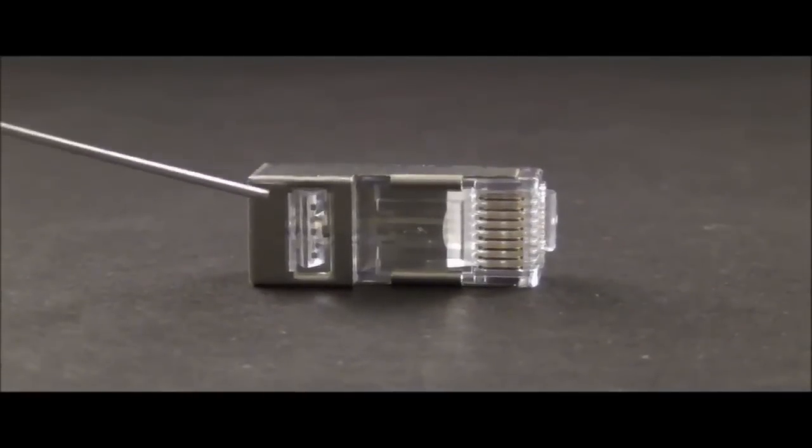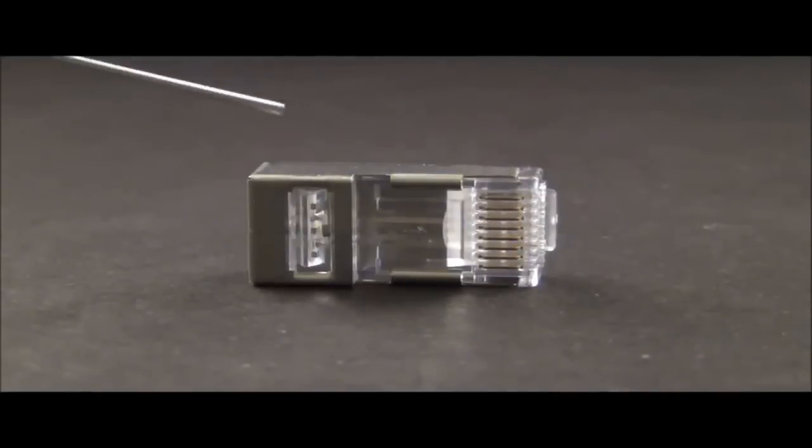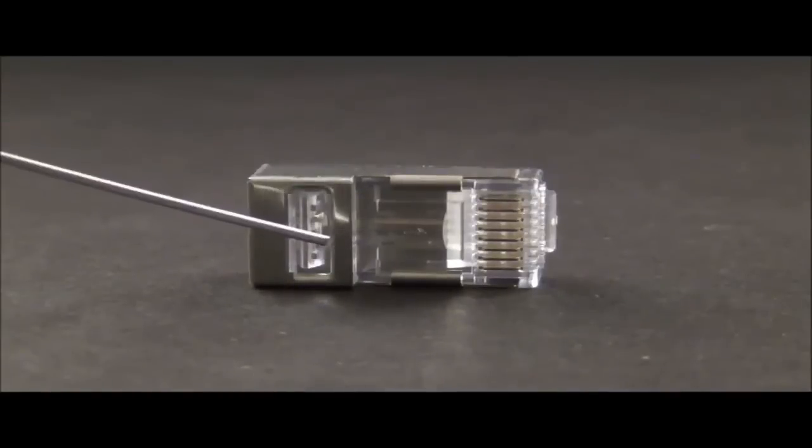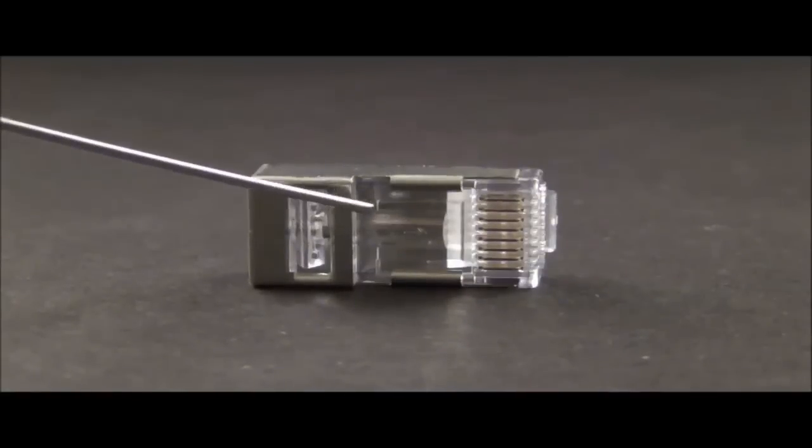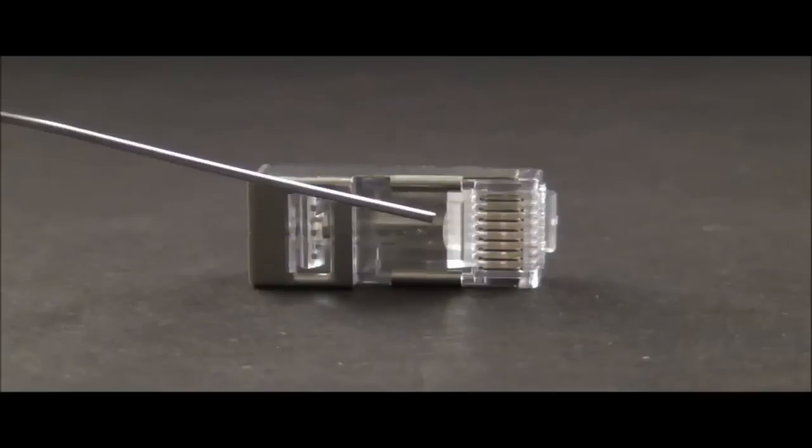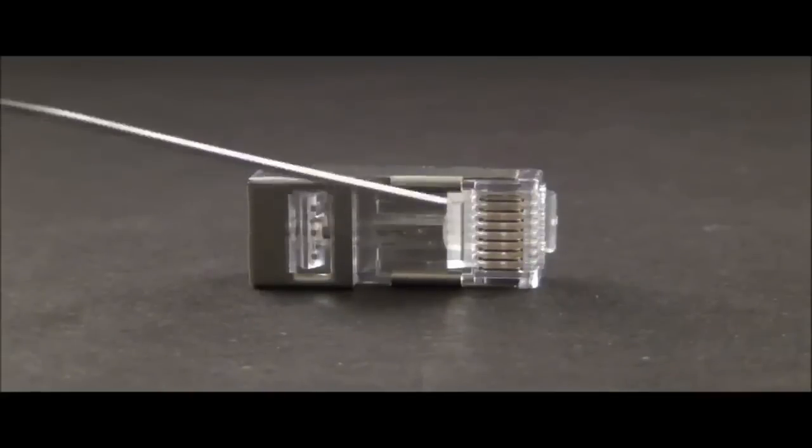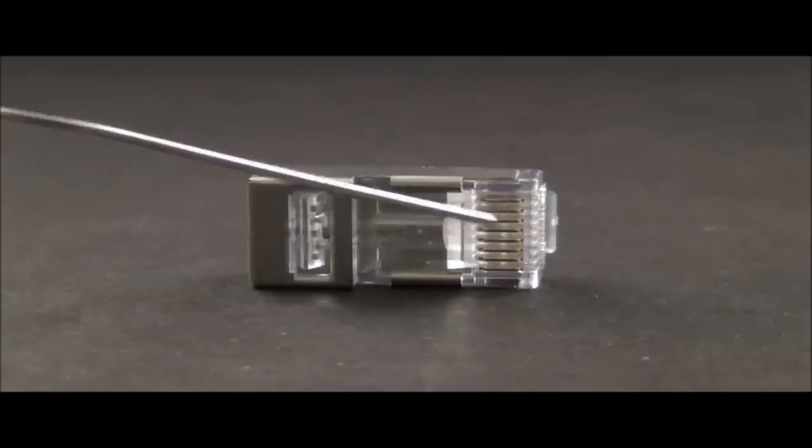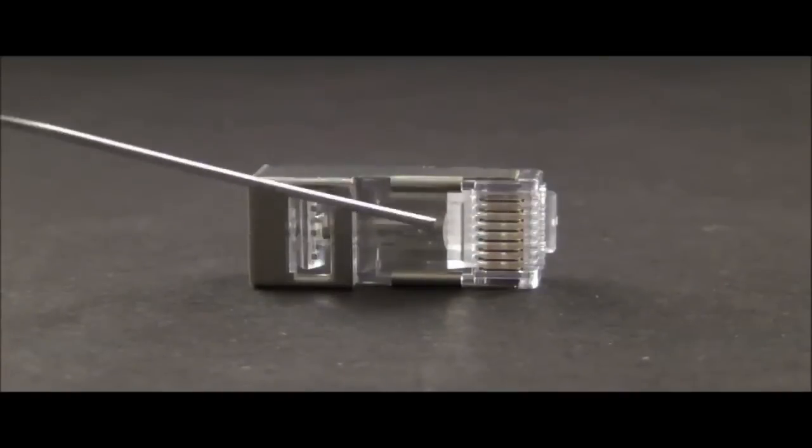On 5e, the distance of the twist to the point of termination is the key. Your twists have to be less than half an inch. So when you prep your cable, that jacket is going to be about right past that strain latch. If you're doing Cat6, you need to keep pushing the jacket up in there and get it up to about right in that area to assure your twists are less than three sixteenths and meet Cat6 performance requirements.